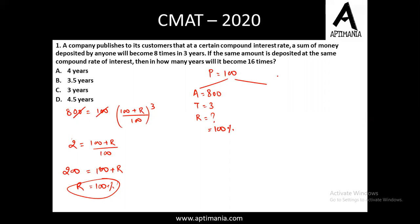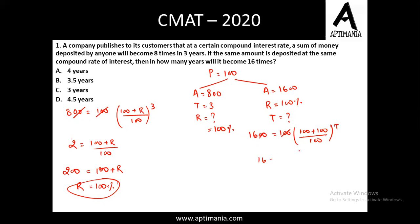The same amount is deposited at compound rate of interest. The principal is 100 again. In how many years will it be 16 times? So the amount here will be 1600. The rate as we know from the previous case was 100%, and time is what we need to find. So: 1600 = 100 × (200/100)^t, which gives 16 = 2^t. Since 16 is 2 to the power 4, t equals 4. So the correct answer for question number 1 is option A, that is 4 years.